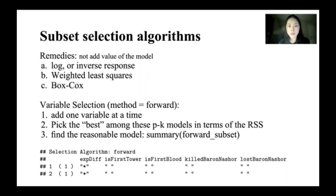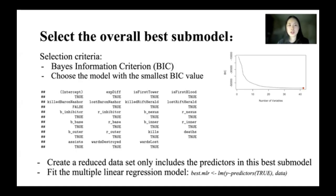We choose to use variable selection with the forward method. It adds one variable at a time to find the reasonable submodel. To select the overall best submodel, we choose to use the selection criteria BIC to choose the model which has the smallest BIC value, then create a reduced dataset by only including the predictors in this best submodel and fit it again to the multiple linear regression model.